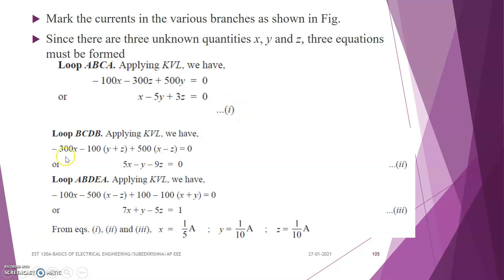For the second loop BCDB, applying KVL gives: minus 300x minus 100(y plus z) plus 500(x minus z) equals 0. Simplifying, we get 5x minus y minus 9z is equal to 0. Mark it as equation number 2. For the third loop ABDEA, KVL gives: minus 100x minus 500(x minus z) plus 100 minus 100(x plus y) equals 0, which simplifies to 7x plus y minus 5z equals 1. Mark it as equation number 3.